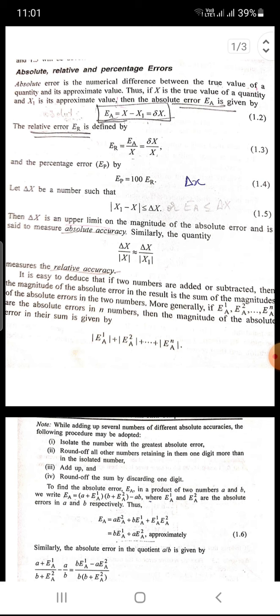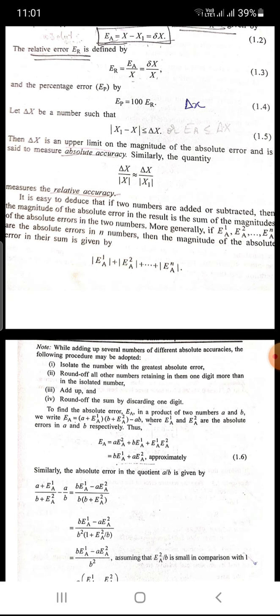Similarly, the quantity delta x upon mod x equals delta x upon mod xi measures the relative accuracy.